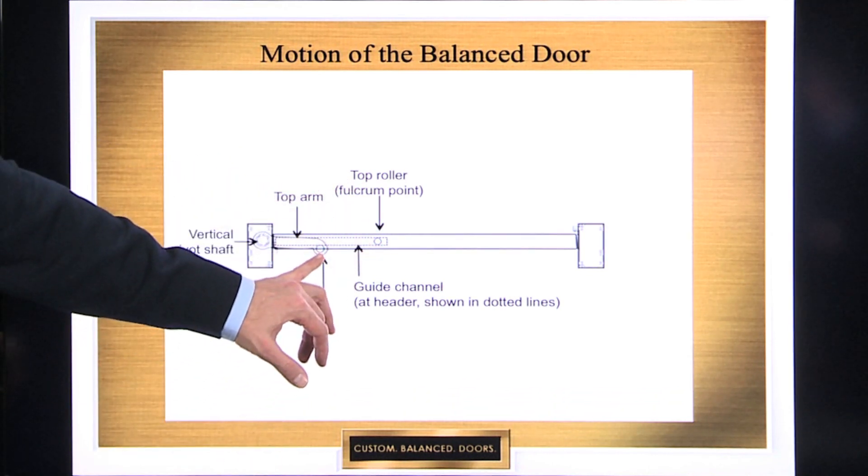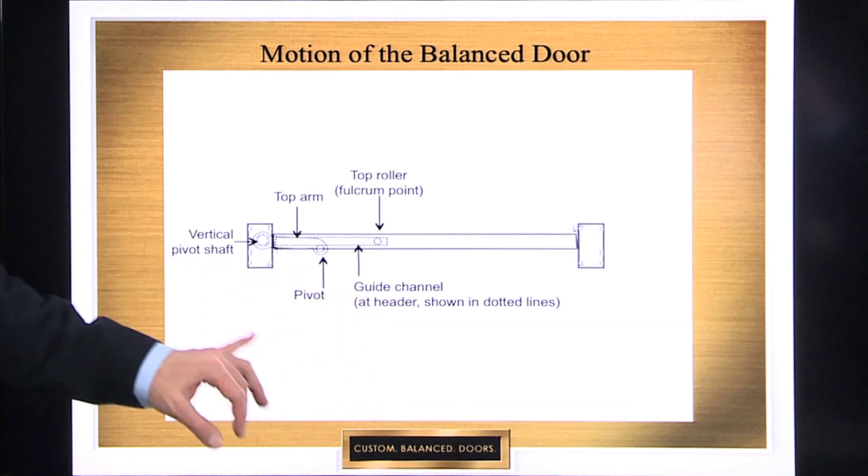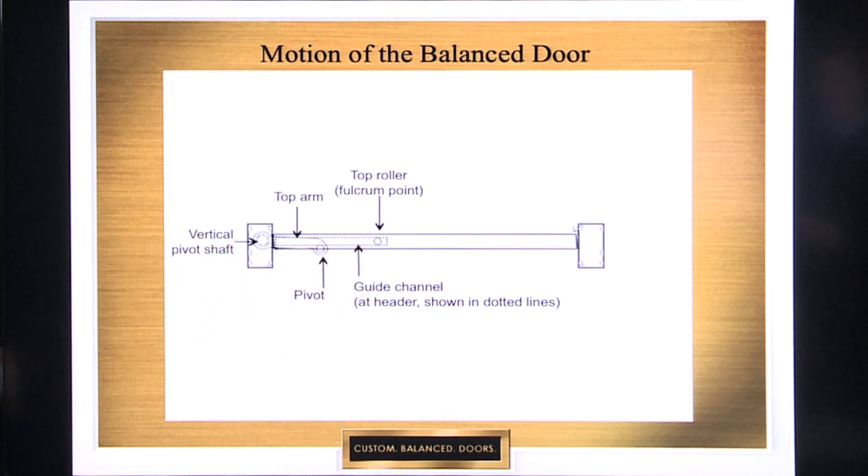You're going to see the pivot hooking the door to the top arm, and then the guide channel. That's shown dotted, and that's where the roller rolls back and forth to guide the door as it opens and closes.